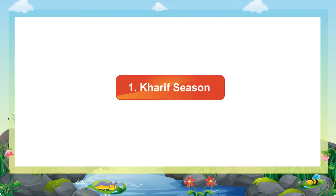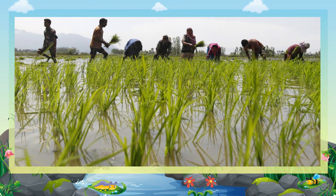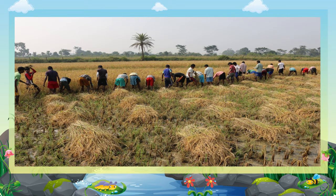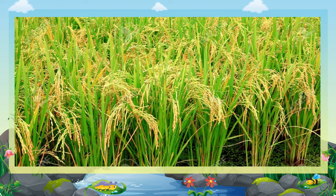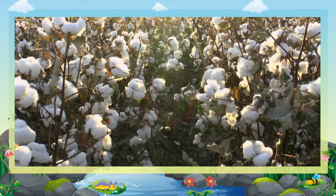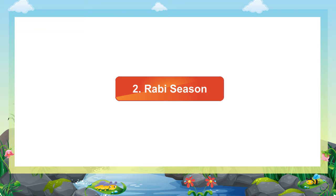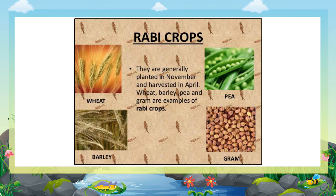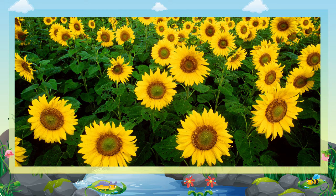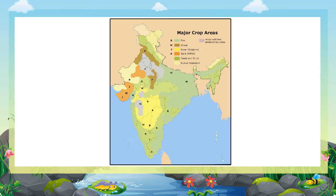Crops: There are two basic crop seasons in India. One: Kharif season — seeds are sown in June on arrival of monsoon and the crops are ready to harvest in November. Main Kharif crops are rice, maize, cotton, millet, and groundnuts. Two: Rabi season — seeds are sown in November and crops are harvested in March. Main Rabi crops are wheat, jowar, oilseeds, etc.